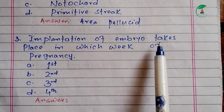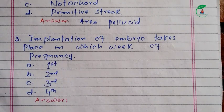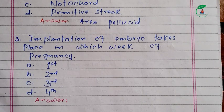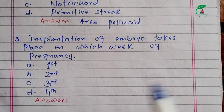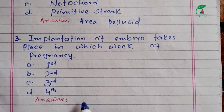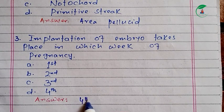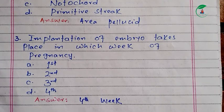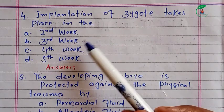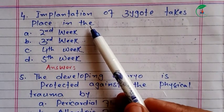The implantation of the embryo takes place in which week of pregnancy? The options are the first week, second week, third week, or fourth week. The implantation of the zygote takes place in the second week.